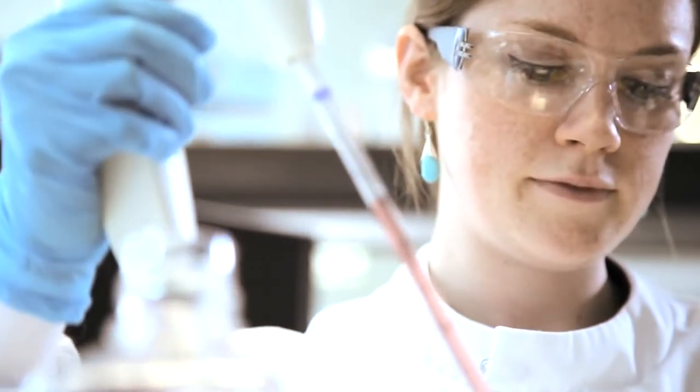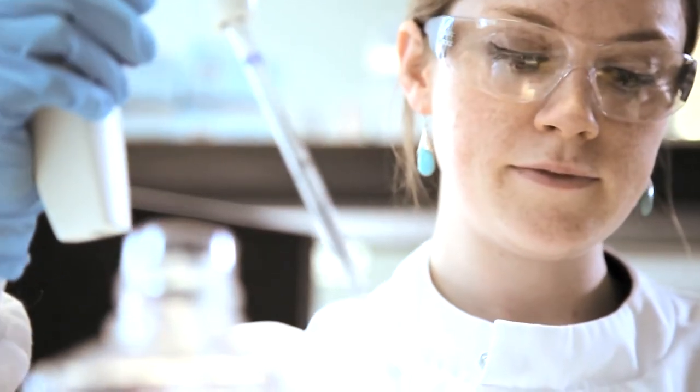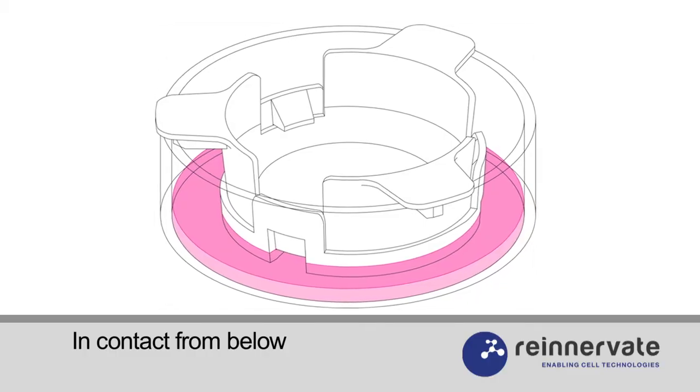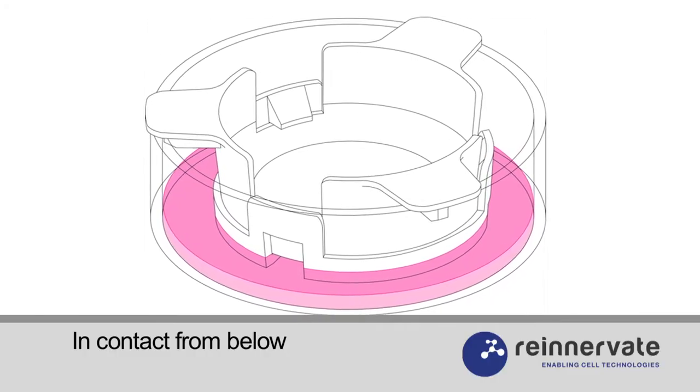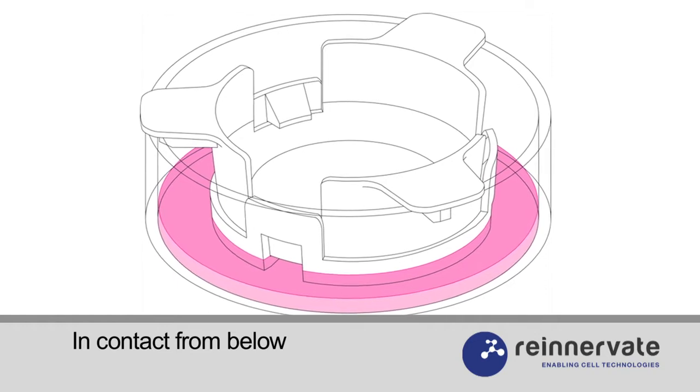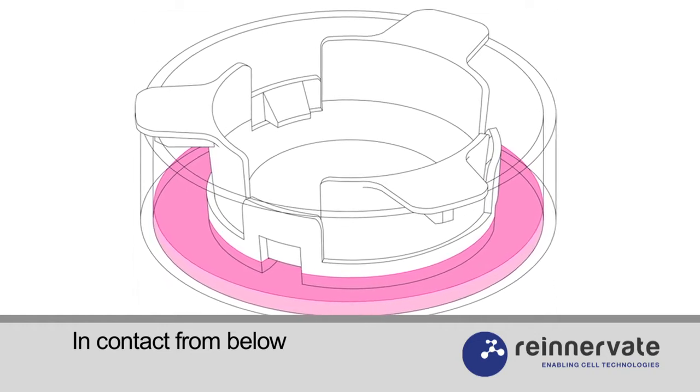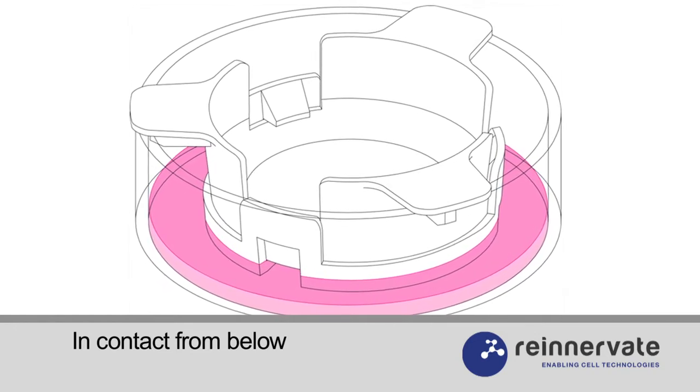For experiments such as the creation of artificial skin constructs in which cells must be grown at the air-liquid interface, it's important that the medium is only in contact with the Alvatex from below the membrane. When using an insert in a 6-well plate, use approximately 3.5 milliliters of media.